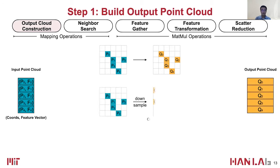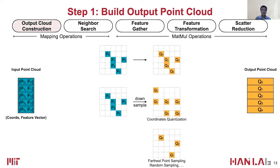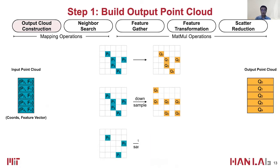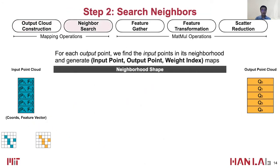For downsampling layers, including convolution with a stride of two, we can either reduce the resolution of the point cloud by quantizing the coordinates, or sample the points via farthest point sampling or random sampling algorithms. For upsampling layers, it is the inverse of the corresponding downsampling. After we have the output point cloud, we then search the neighbor points in the input point cloud for each output point.